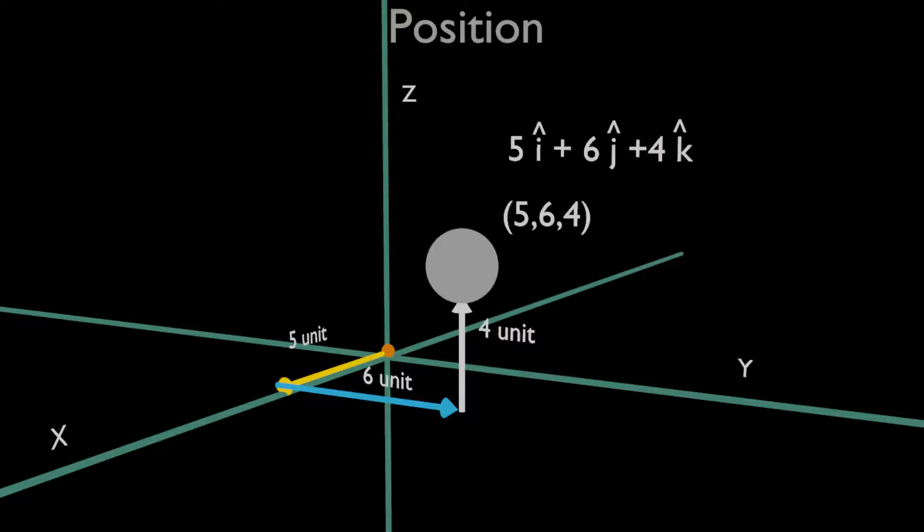The vector form is 5 i-hat plus 6 j-hat plus 4 k-hat, which represents the vector r from the origin to that point. That r vector is called the position vector. Here, i-hat, j-hat, and k-hat are the unit vectors along the x-axis, y-axis, and z-axis respectively.